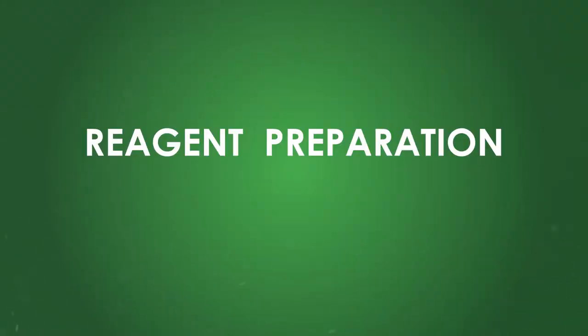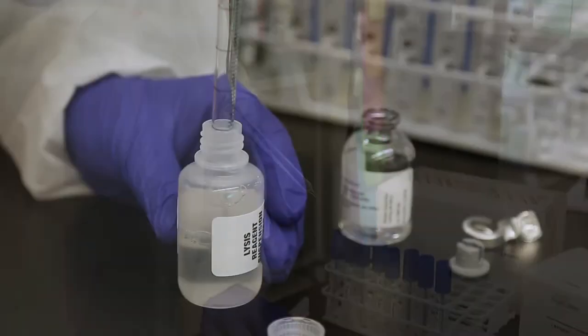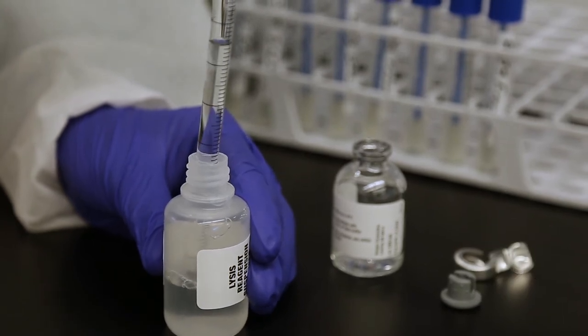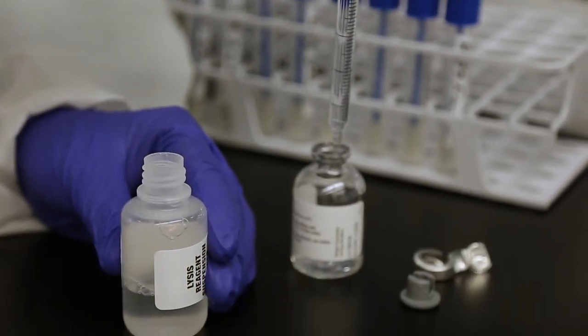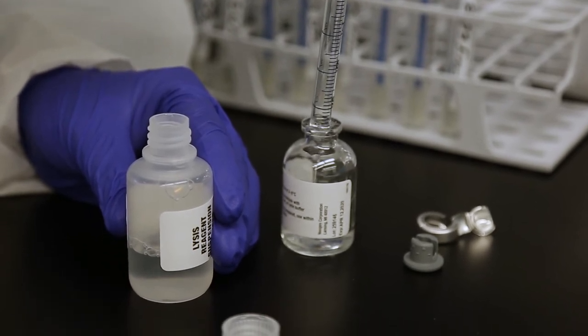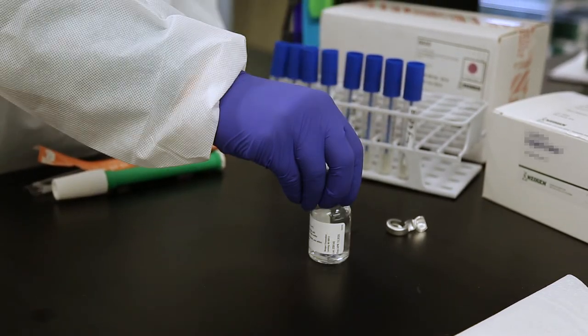Reagent Preparation. Using the 10-milliliter serological pipette and provided pipetter, add 18 milliliters of the Lysis reagent to one vial of the lyophilized lysis reagent that's been at room temperature for at least 15 minutes but less than one hour. Gently swirl to mix. This is enough lysis buffer for 18 samples. Return the non-reconstituted reagents to refrigeration. Any reconstituted reagents can be stored at 2 to 8 degrees Celsius for up to 30 days.